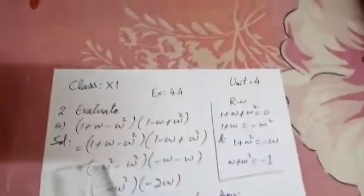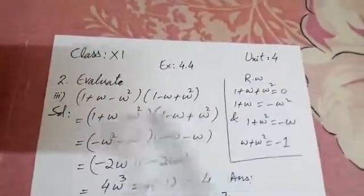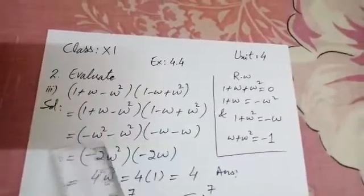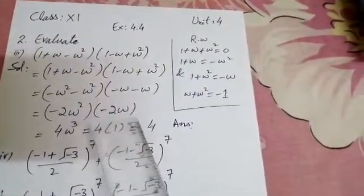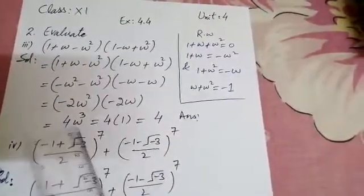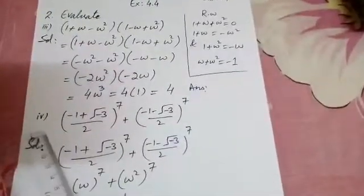Part number 3: evaluate (1 plus ω minus ω²)(1 minus ω plus ω²). Using the identities 1 plus ω equals minus ω² and 1 plus ω² equals minus ω, the first bracket becomes (minus ω² minus ω²) equals minus 2ω², and the second bracket becomes (minus ω minus ω) equals minus 2ω. Multiplying: (minus 2ω²)(minus 2ω) equals 4ω³. Since ω³ equals 1, the answer is 4.